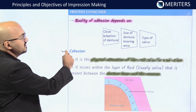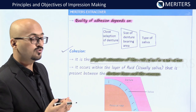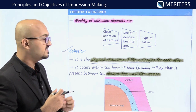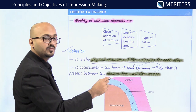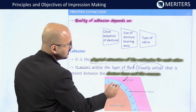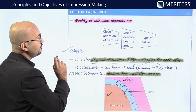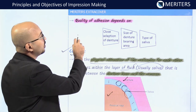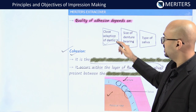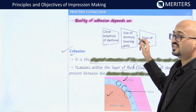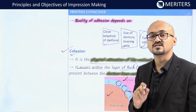Next is cohesion — the physical attraction of like molecules for each other. The forces of attraction between similar saliva molecules are called cohesive forces. Cohesion occurs within the layers of fluid, usually saliva, present between the denture base and the mucosa. The quality of adhesion and cohesion depends on close adaptation of the denture to the tissues, the size of the denture-bearing area, and the type of saliva. The type of saliva is very important in determining the success of complete dentures.